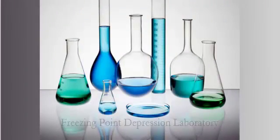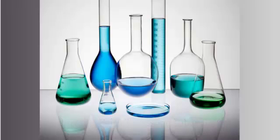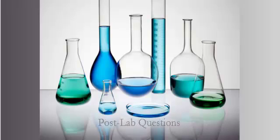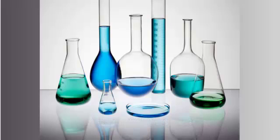Hey, this is Mr. Aiden. We're going to be doing a freezing point depression lab. We're going to find the molar mass of an unknown organic solid by using freezing point depression, which is colligative properties. We're going to be doing that on the block day, and so this is going to be your introduction. I'm going to tell you your pre-lab questions, your procedure, some post-lab questions, and how you're going to be graded on this.